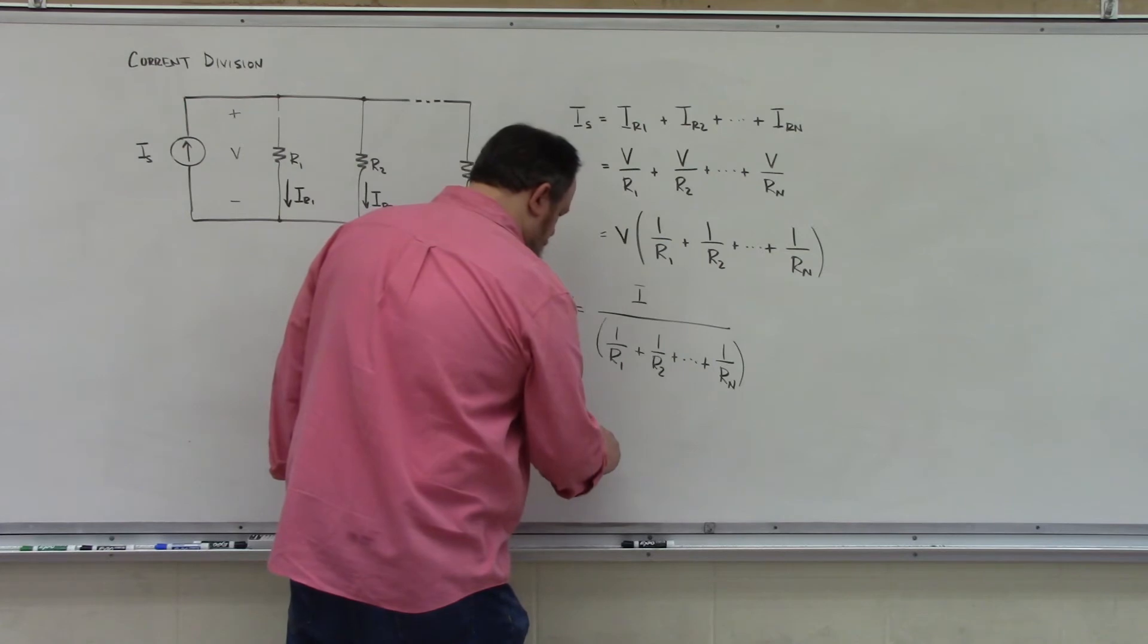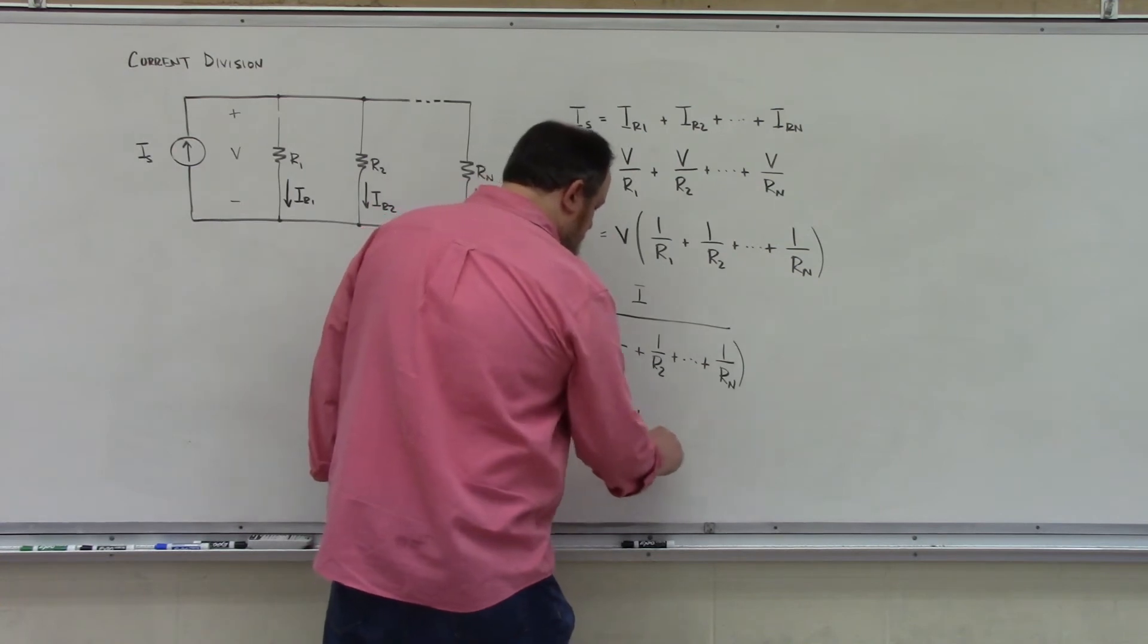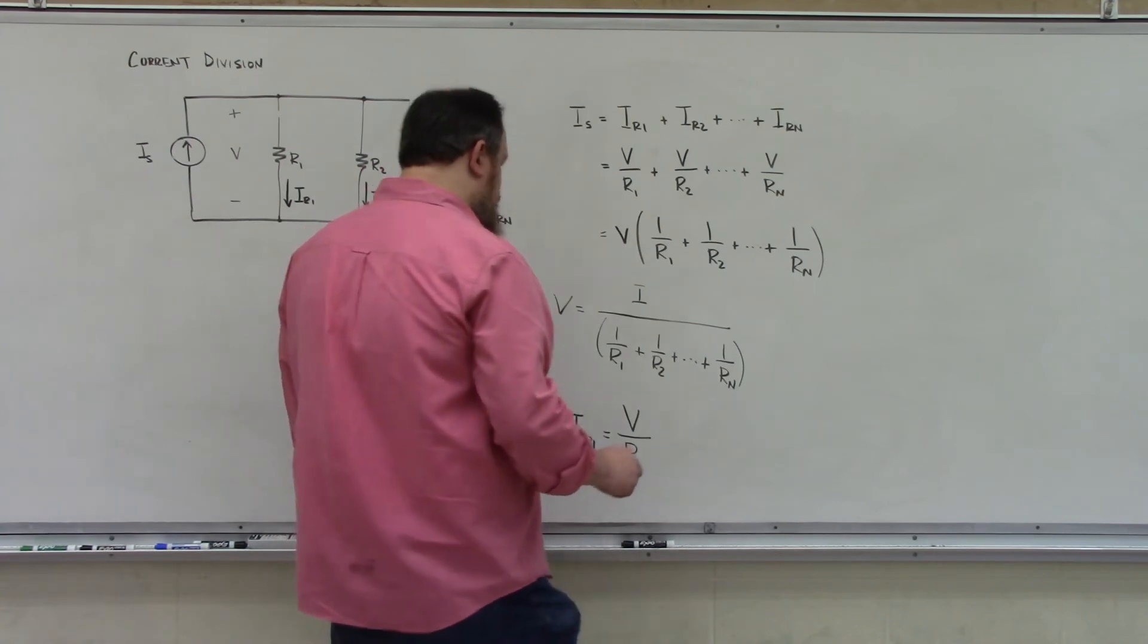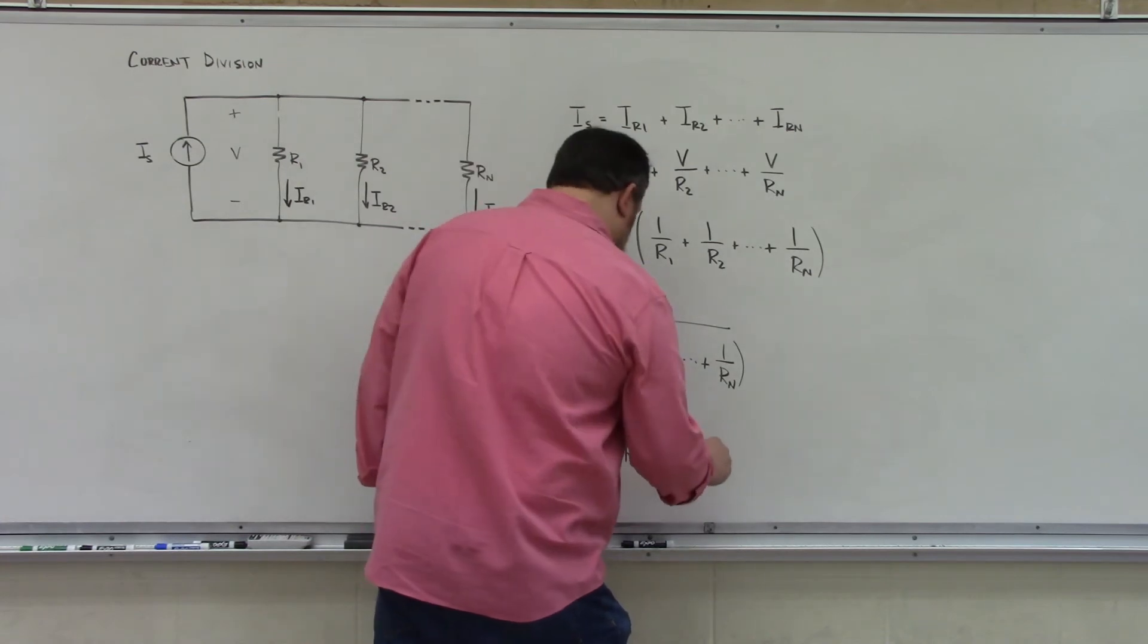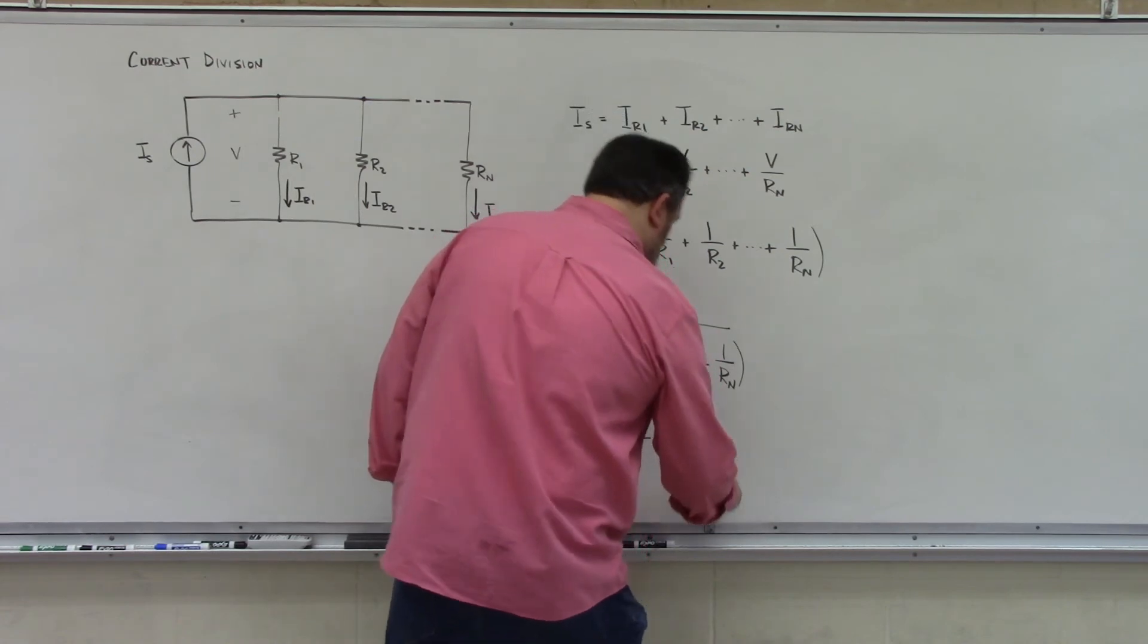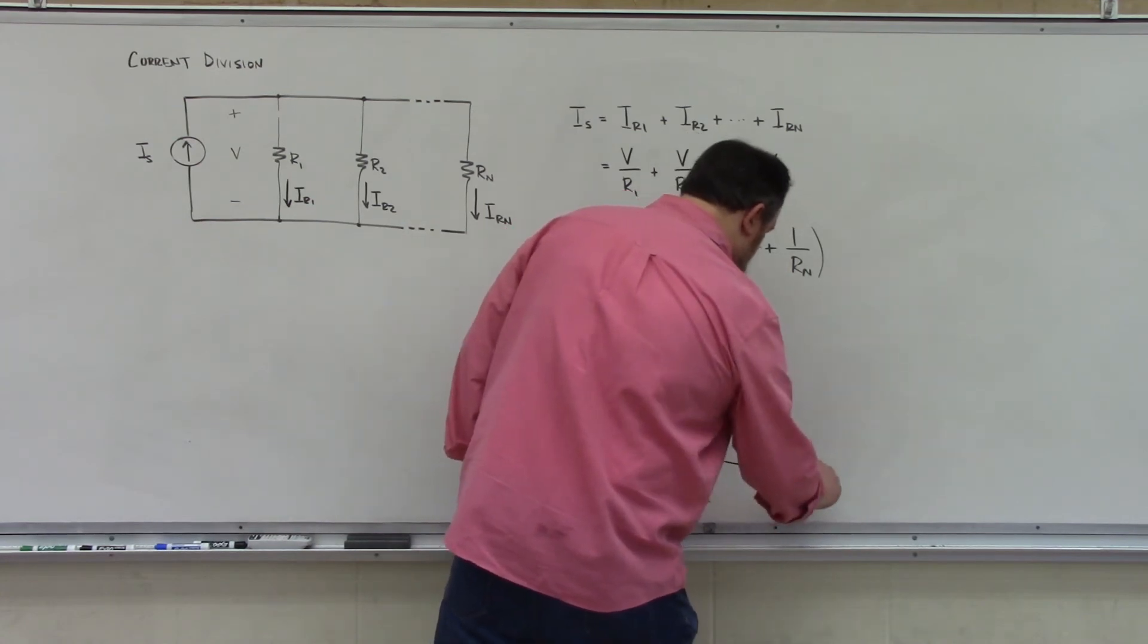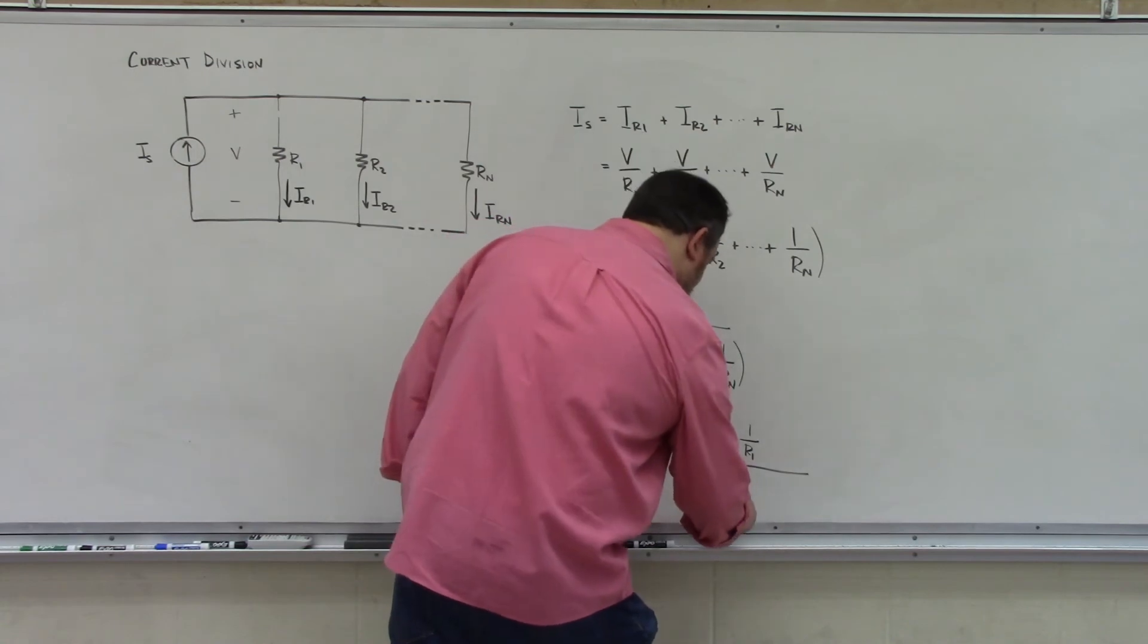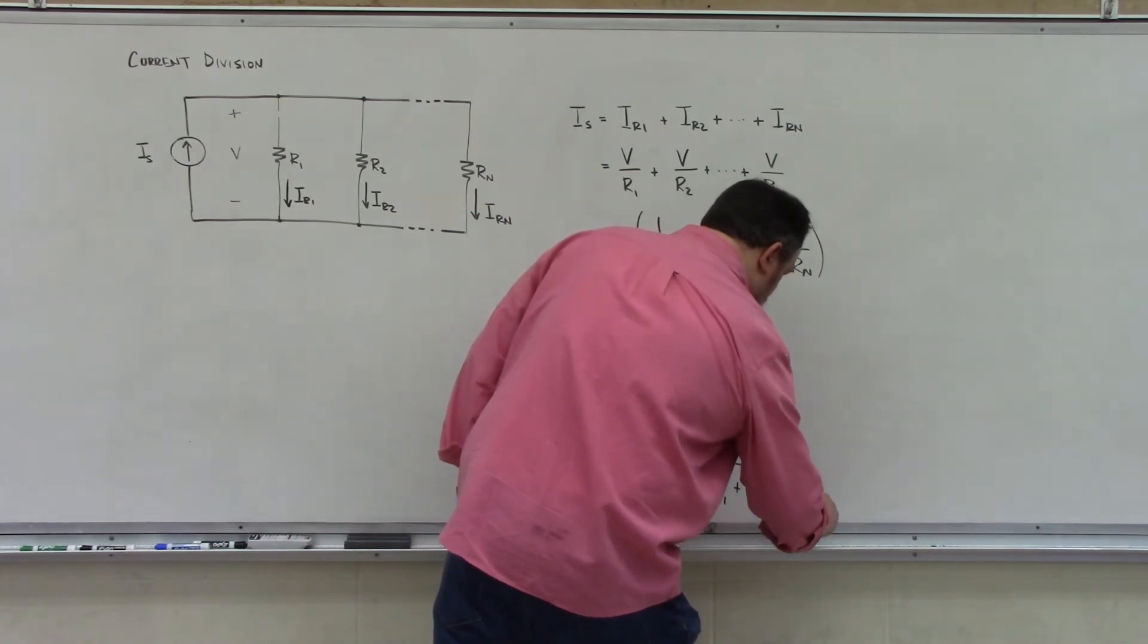which is V divided by R1, is simply IS times 1 over R1 divided by 1 over R1 plus 1 over R2 plus 1 over RN.